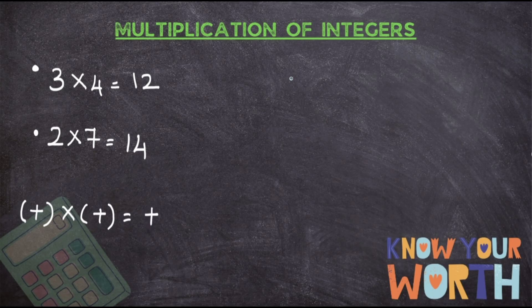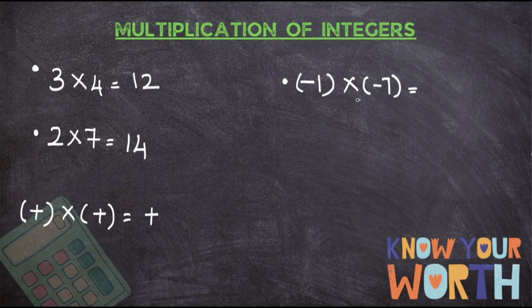Now let us take the next rule, which says when you multiply two negative numbers the answer will be a positive number, not a negative one. Here it is minus one into minus seven. First ignore the sign and just go ahead and multiply: one sevens are seven. When multiplying two negative numbers the answer will be positive — minus into minus will be plus — so the answer is plus seven.